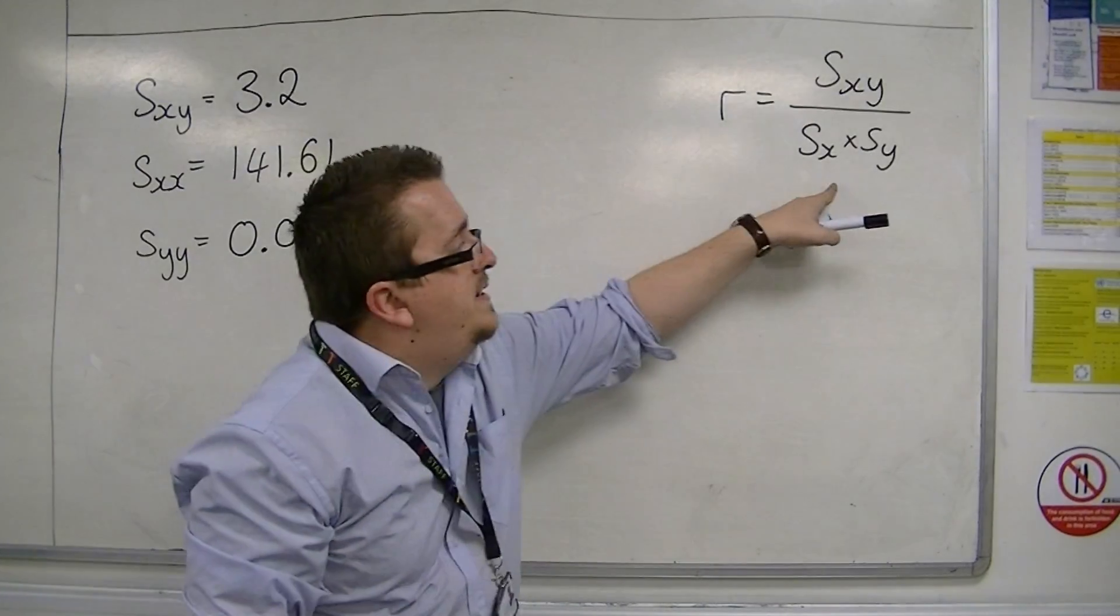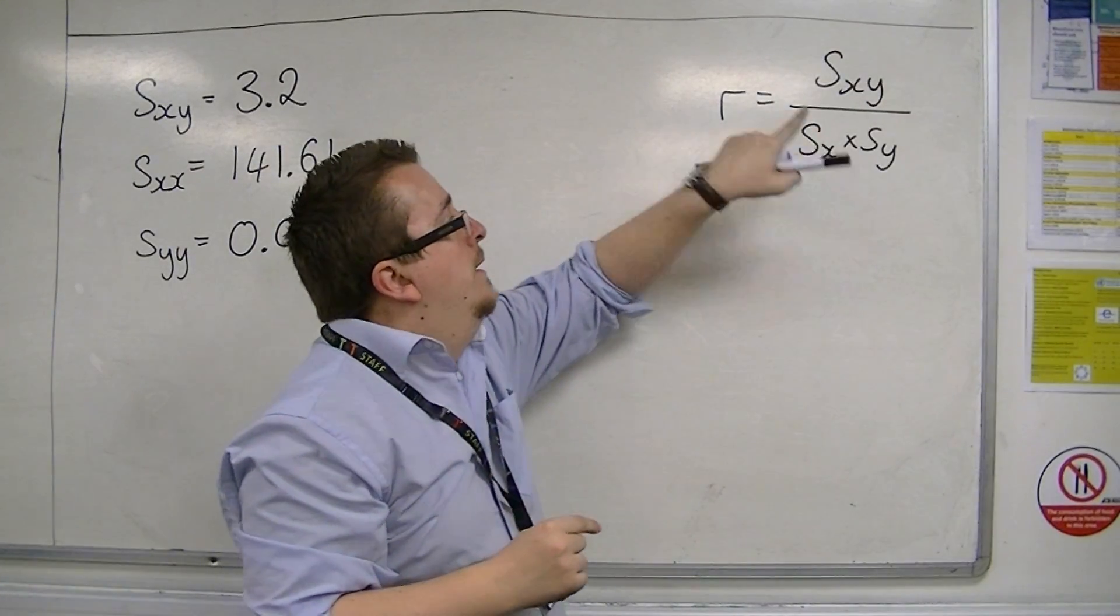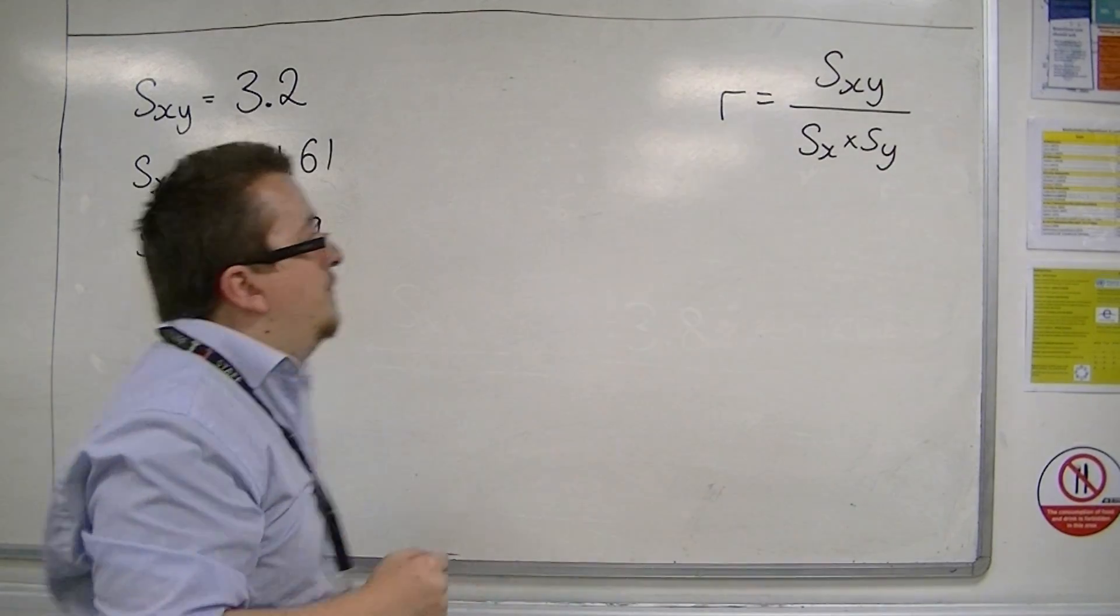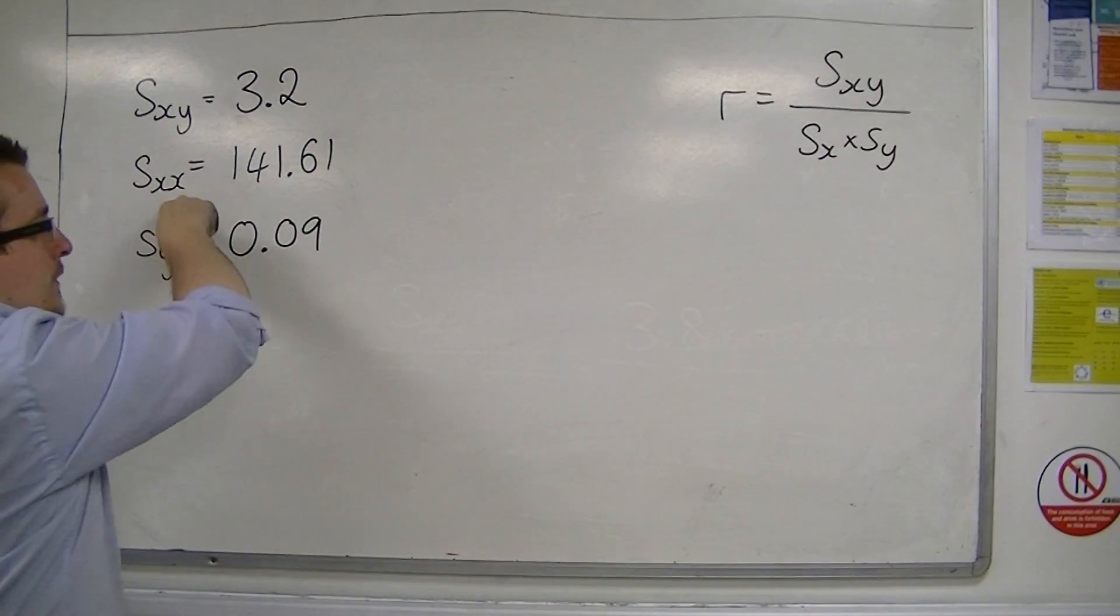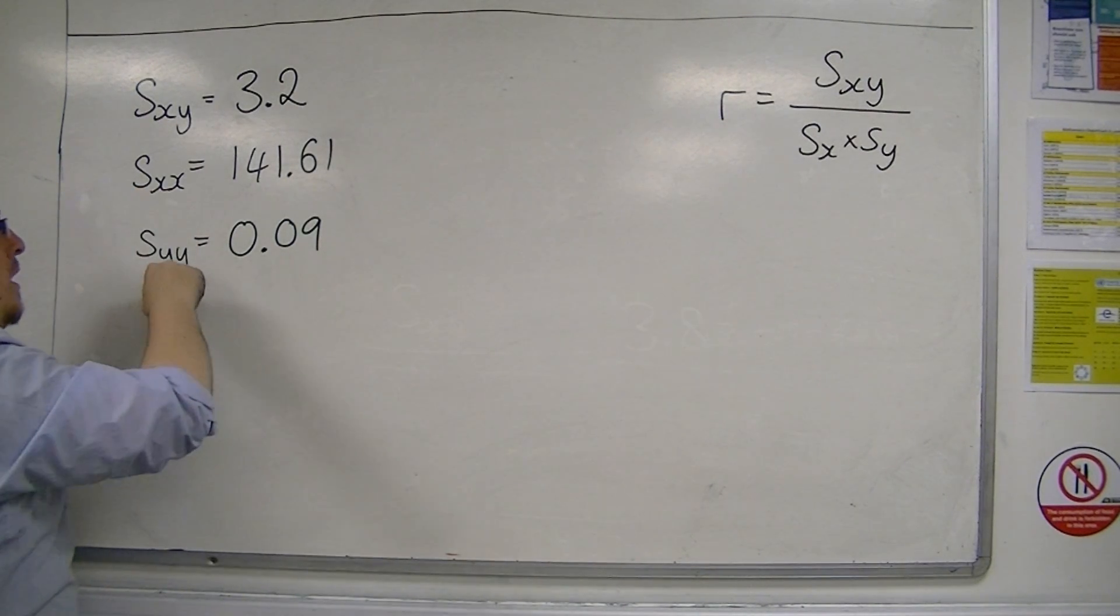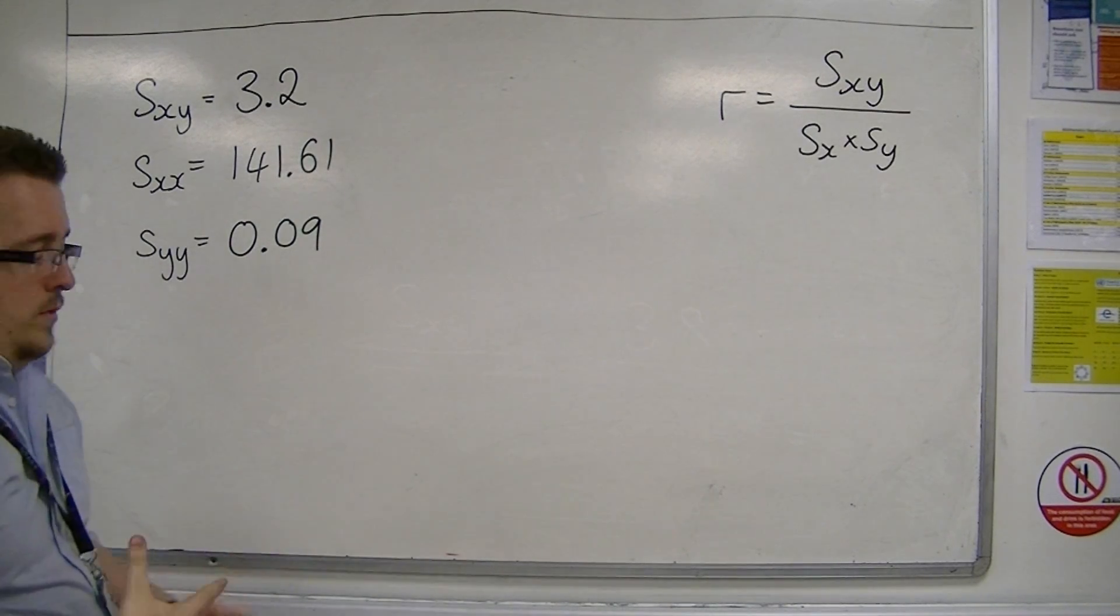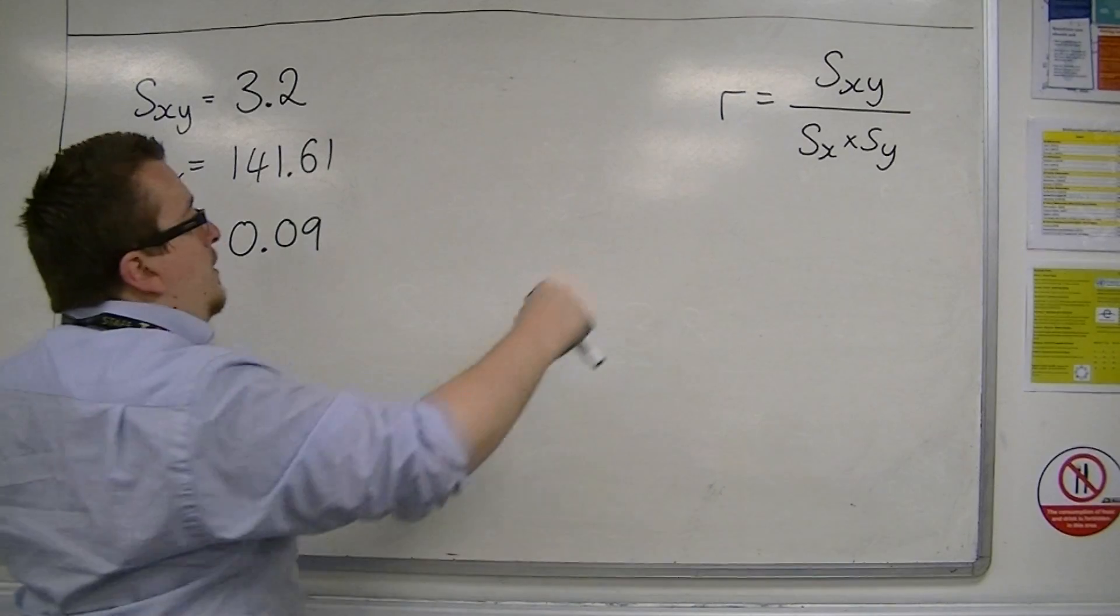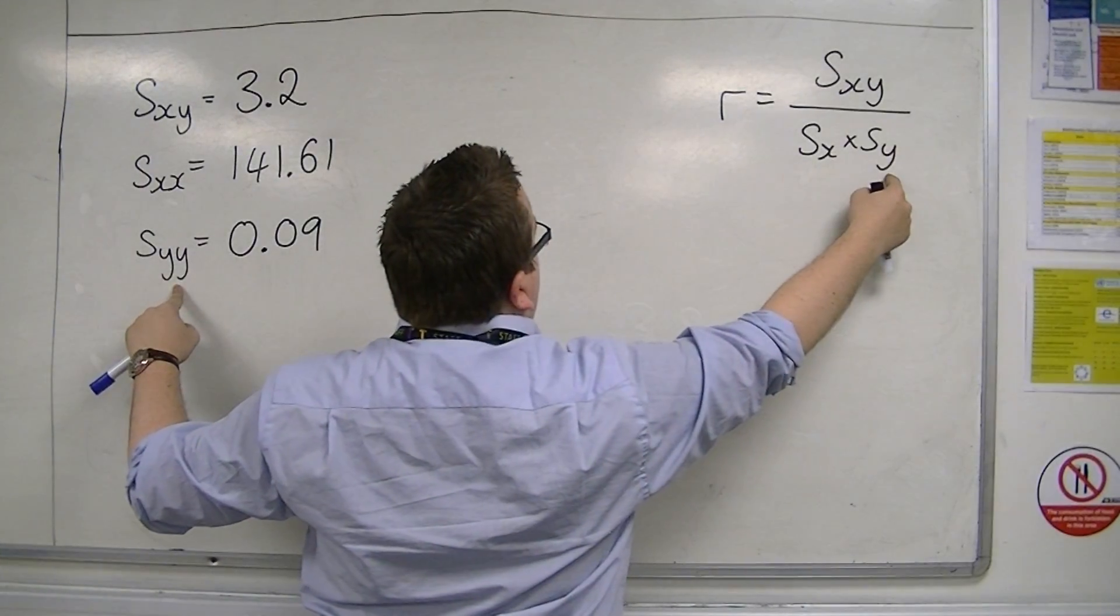Now, these represented the standard deviation. The standard deviation of the x values, the standard deviation of the y values. Sxx represents the variance of the x values, and Syy is the variance of the y values. And so, this value, square rooted, would be this value.